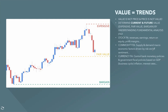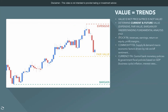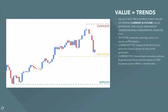To determine true value we need to understand fundamental analysis and risk sentiment. For stocks, that's revenues, earnings, return on equity, profit margins. For commodities, it's supply and demand and macroeconomic factors. For currencies, it's central bank monetary policy and government fiscal policy based on GDP, inflation, and interest rate cycles. We're determining what current price is and what potential future value may be.